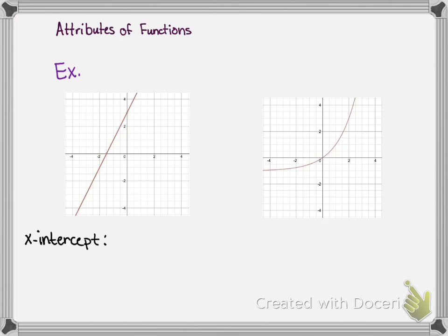One attribute is the x-intercept, and the x-intercept is the point where a function crosses the x-axis. For the first function, we notice it crosses the x-axis here at the point (-1.5, 0). On the second function it crosses the x-axis at the origin at the point (0, 0).